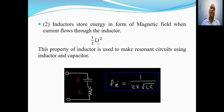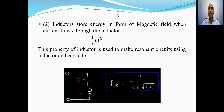Since inductors store energy in the form of a magnetic field, inductors along with capacitors are used to make resonant circuits — that is, they can be used to produce oscillations of a desired frequency. The resonant frequency produced by an inductor and capacitor is related by 1 / (2π√LC).